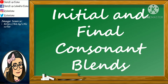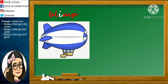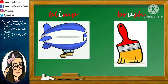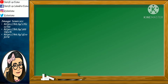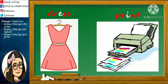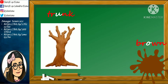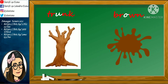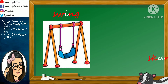There are also some words which both have initial and final consonant blends. Here are some of them: Blimp, Brush, Plant, Crown, Dress, Print, Trunk, Brown, Sweet, Skunk.